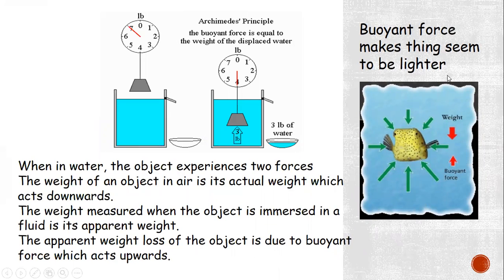You can see how the buoyant force makes things seem lighter. Here is a weight hanging in air — the weight of this object is seven pounds. When it is lowered into the fluid, it displaces fluid by a volume equal to the volume of the object. The weight of this displaced water is three pounds. Because of this three-pound loss, the scale now shows four pounds — seven minus three equals four pounds. The upthrust acting on this object is three pounds.